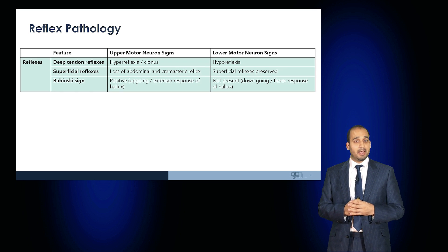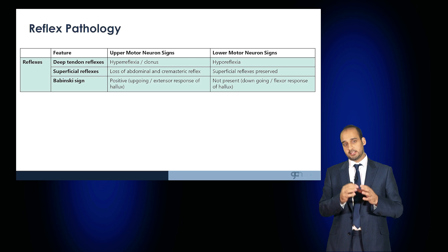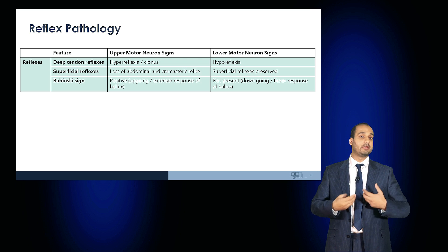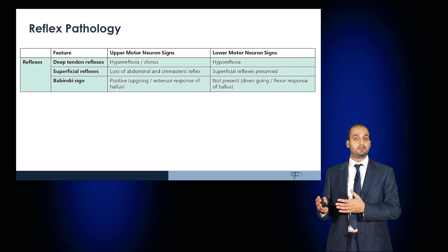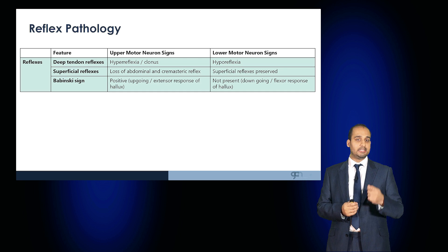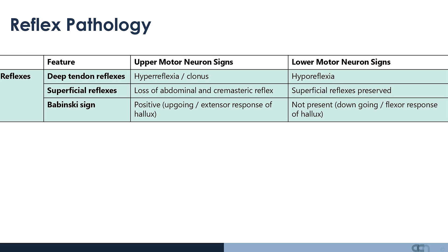The reason we test reflexes is to determine whether they are normal or abnormal, and if abnormal, whether there are upper or lower motor neuron signs. The deep tendon reflexes become hyperreflexic with clonus in upper motor neuron conditions and hyporeflexic in lower motor neuron conditions. The Babinski sign is positive — demonstrated by an up-going or extensor response of the hallux — in upper motor neuron conditions, and equivocal or down-going in a lower motor neuron condition.